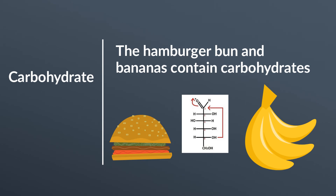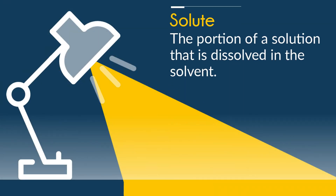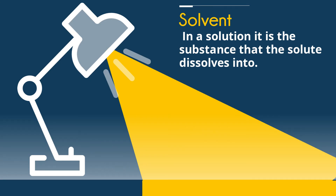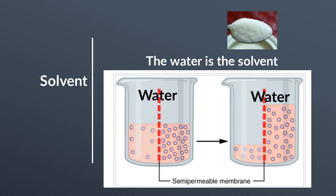Next we have a solute. It's the portion of a solution that is dissolved in the solvent. In this example sugar is being dissolved into water. And finally the solvent — in a solution, it is the substance that the solute dissolves into. In this example water is the solvent.